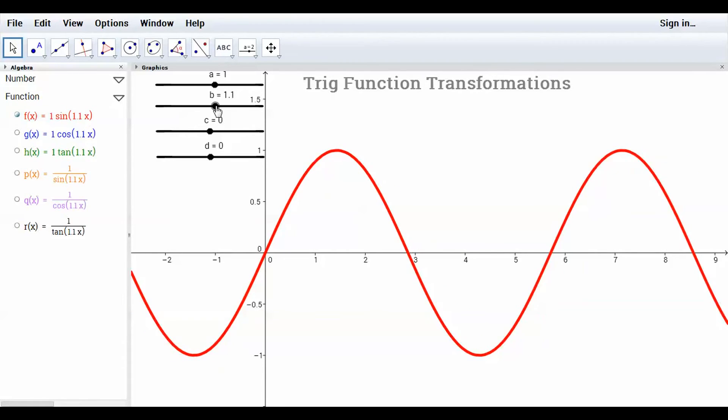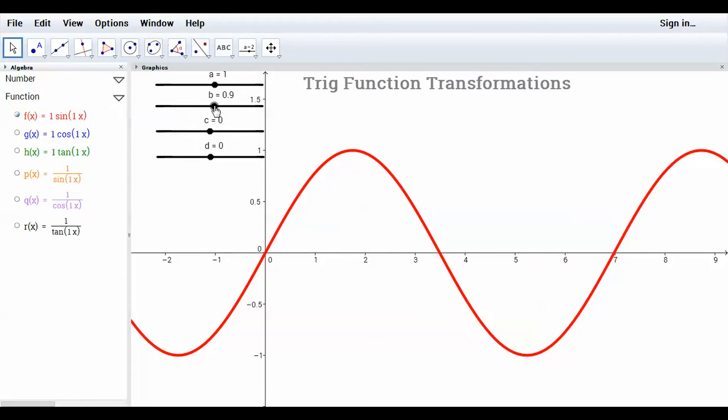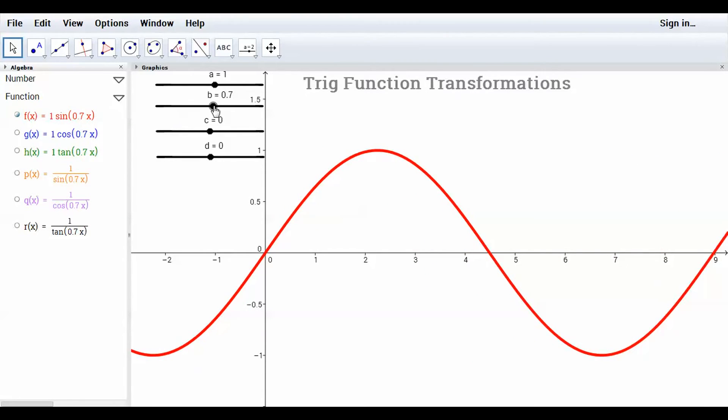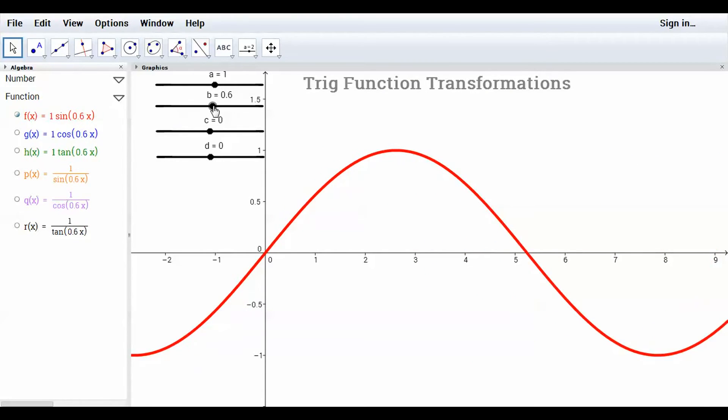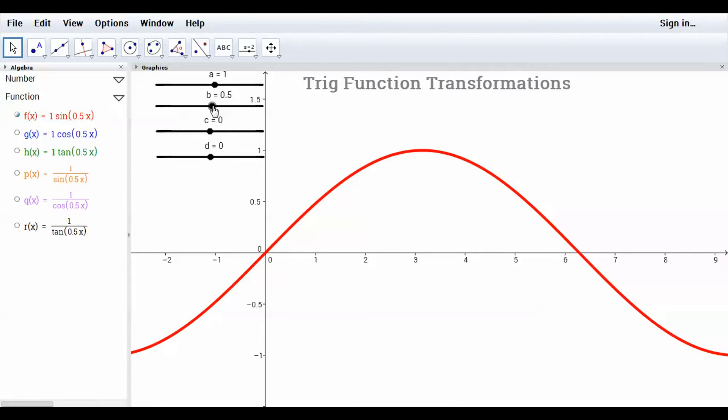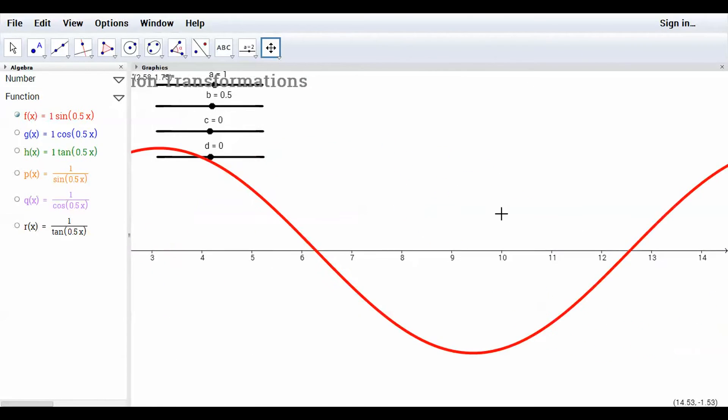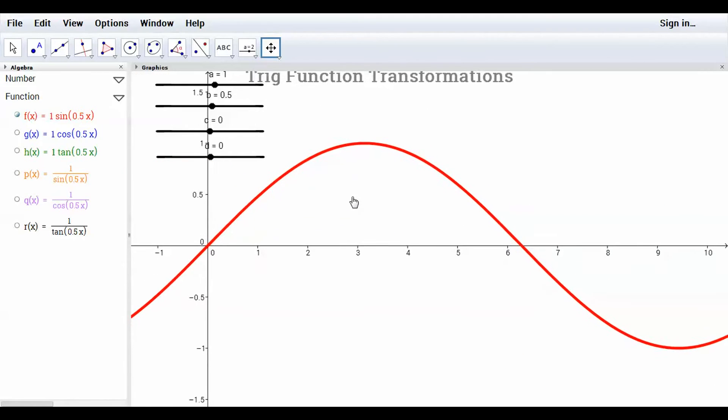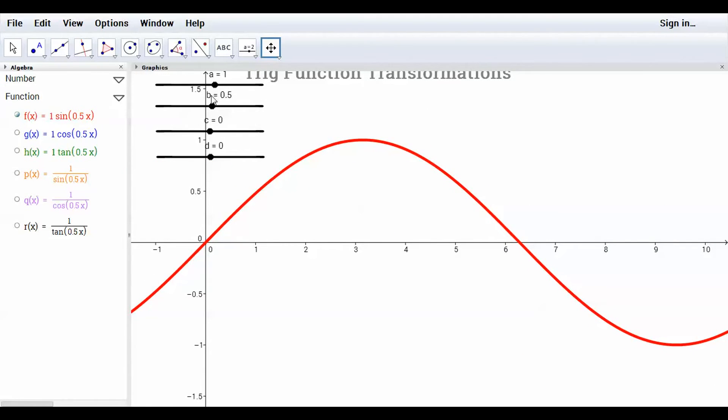If I increase the period, that means I have to decrease the B value. 2 pi divided by a fraction will make that period longer. So now it takes longer for this 0 to repeat itself. Now it's way over here, like 12.6 or so. And you would calculate that by taking 2 pi divided by the B value.